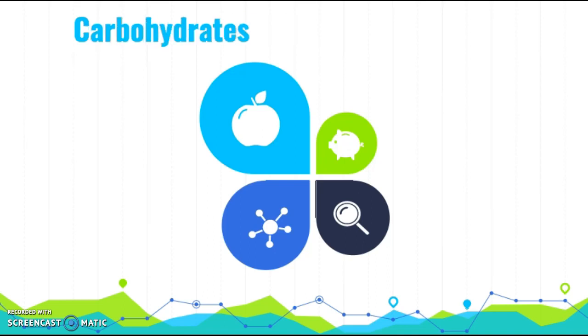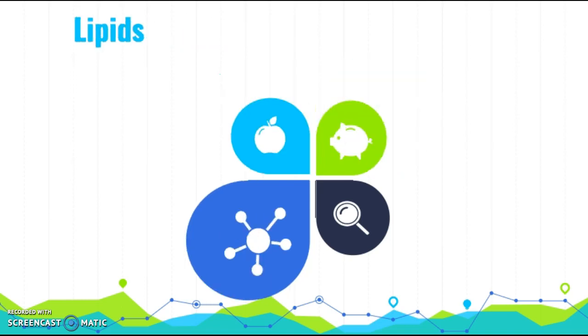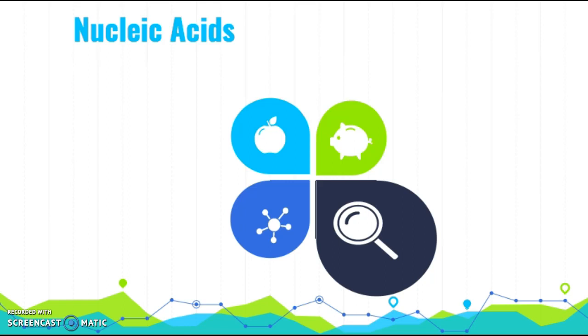So the first one or the first category is carbohydrates. The next is going to be protein. The next will be lipids. And then finally, nucleic acids. So let's talk about an example of each one of these.